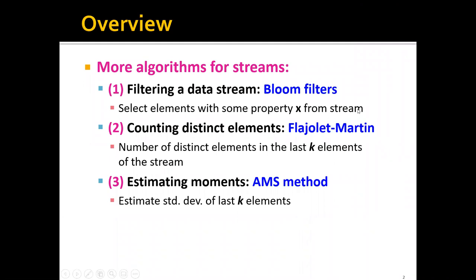The first one is the famous Bloom filters for filtering a data stream. Basically, the goal of this algorithm is to select elements with some property X from the stream. The second algorithm we'll talk about is the Flajolet-Martin algorithm for counting distinct elements.